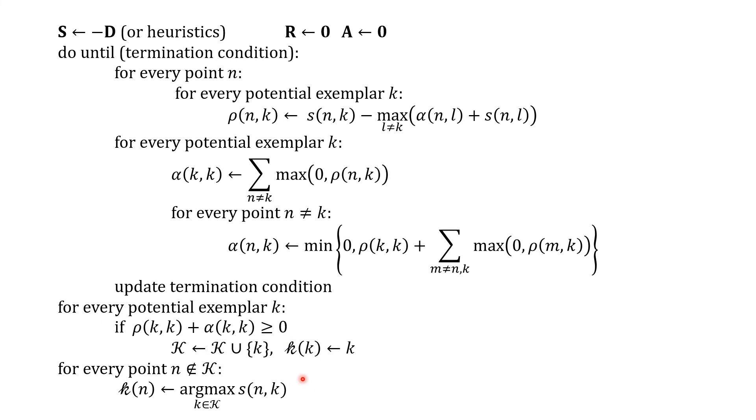And then we assign the rest of the points to the exemplars that we have selected. Now in this algorithm, this set K should have been initialized to zero. It's not shown here.